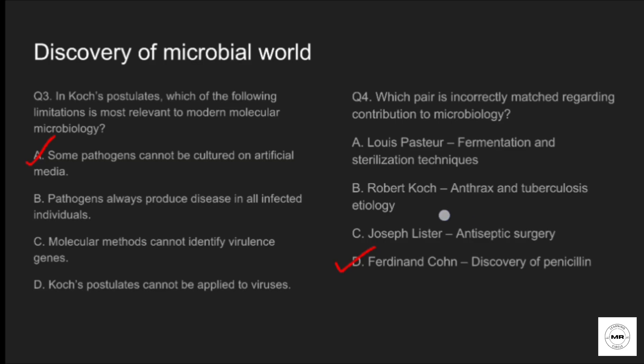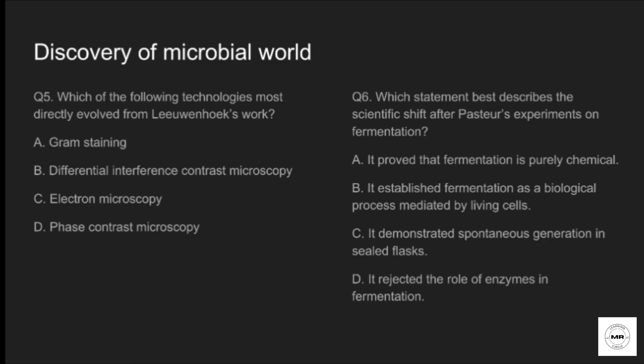Question number five: which of the following techniques most directly evolved from Leeuwenhoek's work? Option A: gram staining. Option B: differential interference contrast microscopy. Option C: electron microscopy. Option D: phase contrast microscopy. The correct answer is option D, phase contrast microscopy.